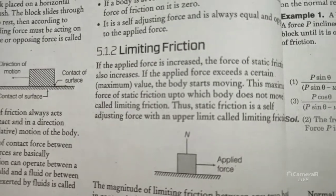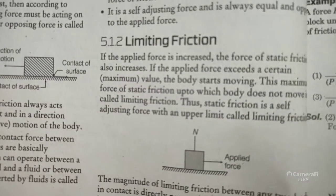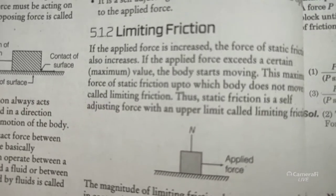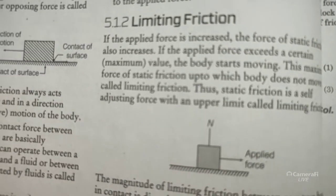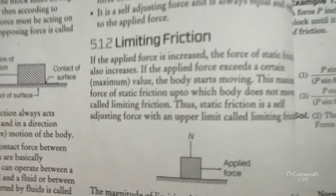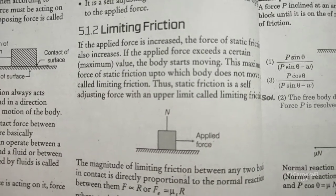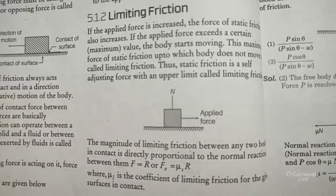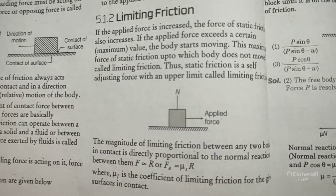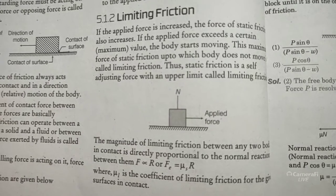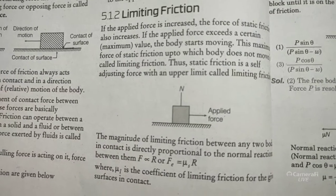If the applied force exceeds a certain maximum value, the body starts moving. The maximum value of static friction up to which the body does not move is called limiting friction. Static friction is a self-adjusting force with an upper limit.